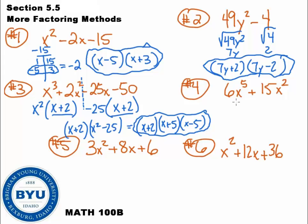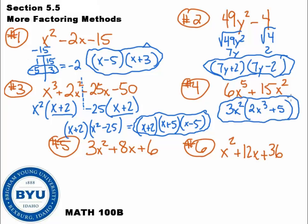Question number four: is there any common stuff? I see some — 3 goes into 6 and 15, so I pull out a 3. I also pull out an x squared. After factoring out 3x squared, I'm left with 2x cubed plus 5. This is a two-term polynomial, but it's not perfect squares, and it's addition — pluses don't factor down with perfect squares. So that is my answer.